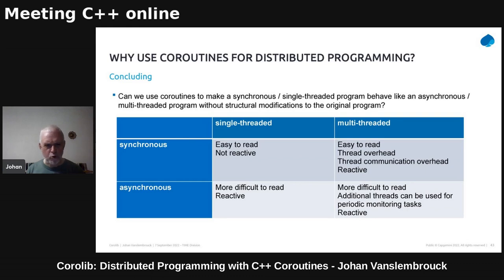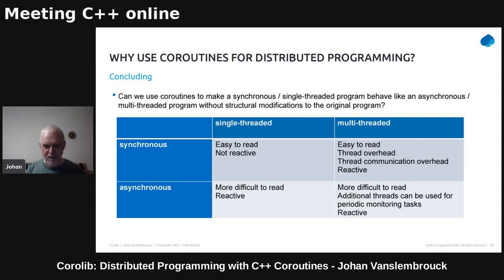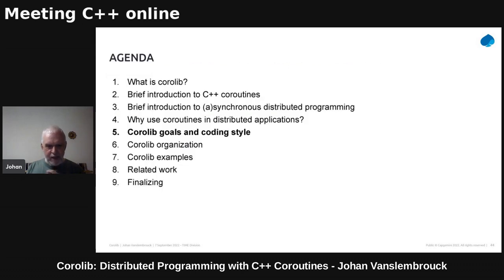I've made a small concluding slide. We have synchronous and asynchronous, single-threaded and multi-threaded. The advantages of both: synchronous single-threaded is easy to read; multi-threaded has thread overhead; asynchronous multi-threaded has its own complexities. So that's about all — I hope you're convinced that you should look at coroutines to replace those asynchronous styles that require a lot of work to rewrite. You can do everything with coroutines.